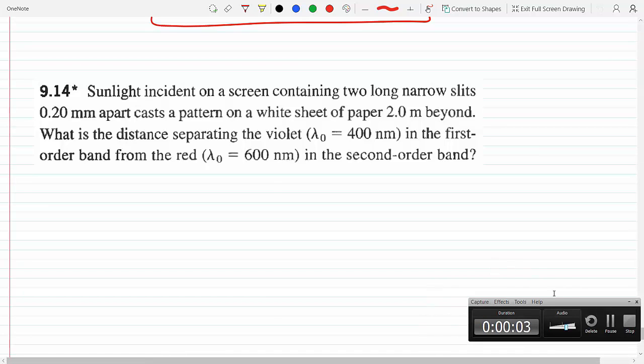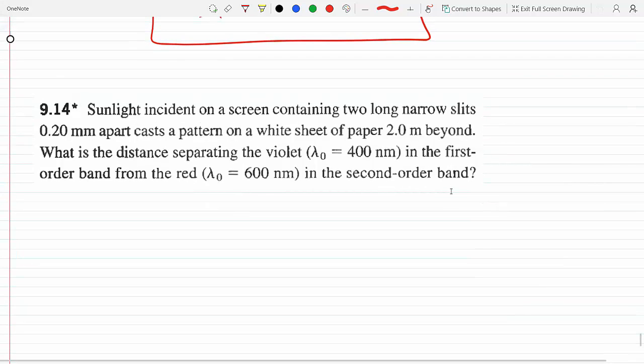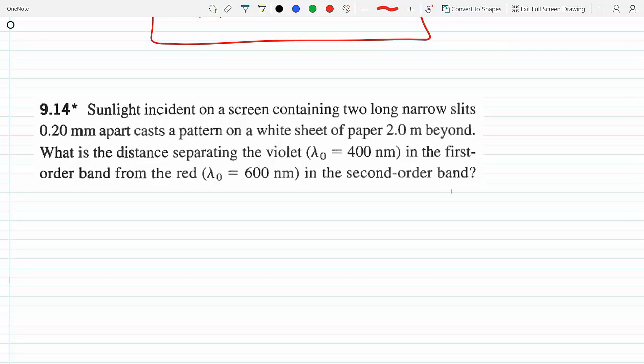Okay, so sunlight incident on a screen containing two long narrow slits, 20 millimeters apart, casts a pattern on a white sheet three meters beyond. What's the distance separating the violet in the first order band from the red in the second order band?